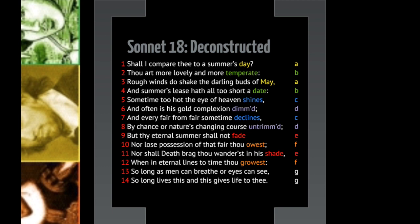Line nine: 'But thy eternal summer shall not fade.' Now we have a swing — last week we talked about a hinge word, and that's what's happening on line nine. 'But' is the hinge. That's what this poem is really about: your eternal sunshine, my dear — you are so lovely and beautiful, your light will never fade. Line ten: 'Nor lose possession of that fair thou owest' — you'll never lose that beauty you have.